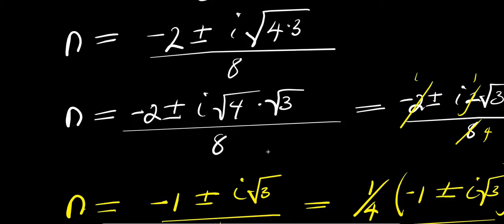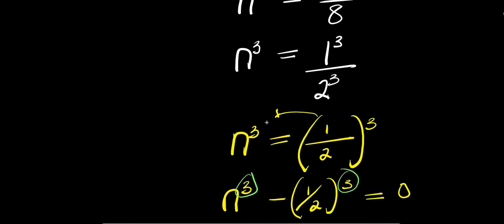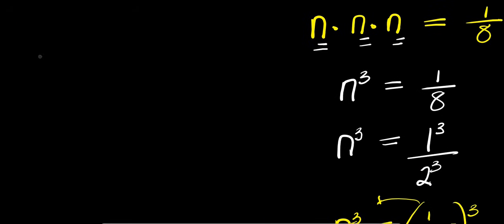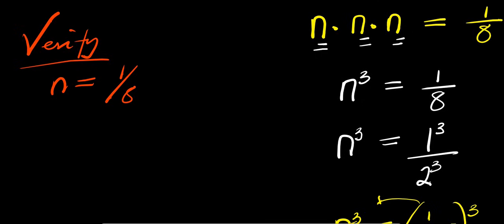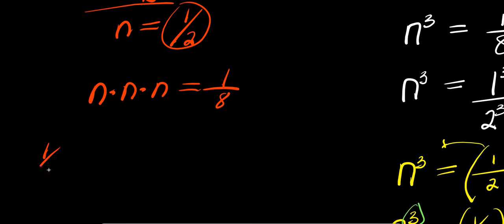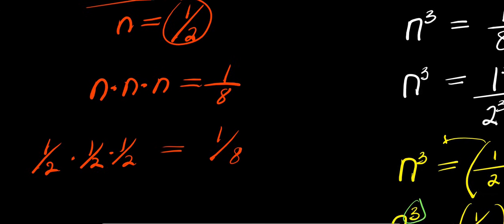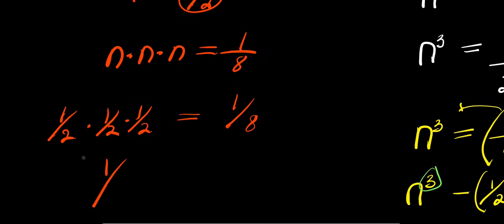So these are the two complex values for n, and we also have one real value for n which is 1 over 2. We can verify by substituting the real value: n times n times n equals 1 over 8. So 1 over 2 times 1 over 2 times 1 over 2: multiplying the numerators gives 1, and the denominators give 2 times 2 times 2 equals 8, so we get 1 over 8. Verified.